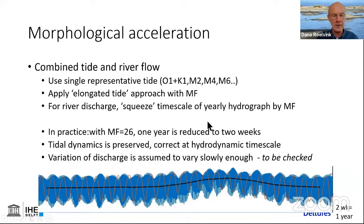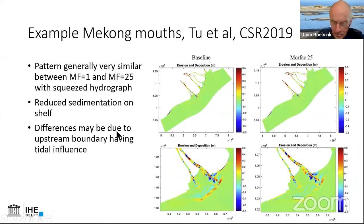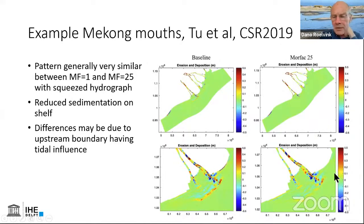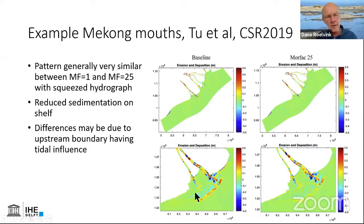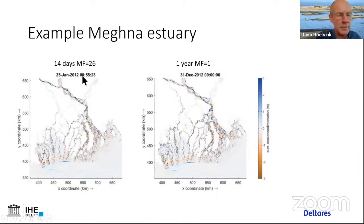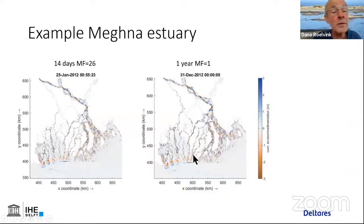Does this trick work? It works reasonably well. An example from the Mekong mouths shows that the main patterns between the baseline and a morfac of 25 are very similar — we miss a bit of sedimentation but are not sure why. Another example for the Meghna estuary: comparing 14 days with a morfac of 26 versus one year with a morfac of 1 — you have to believe me, these patterns are very, very similar and match very well.